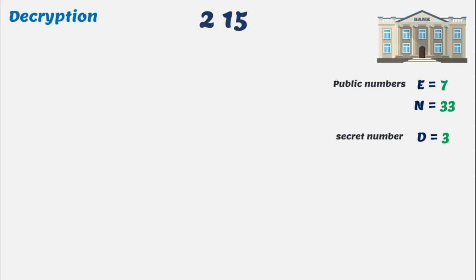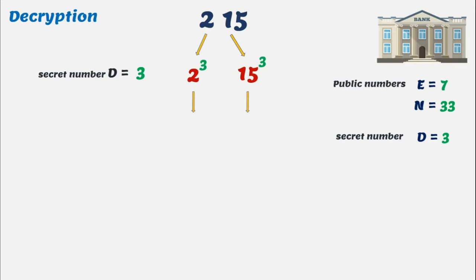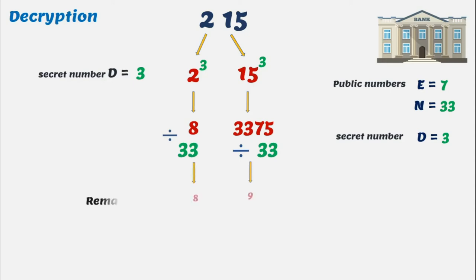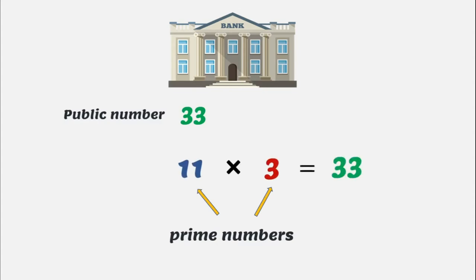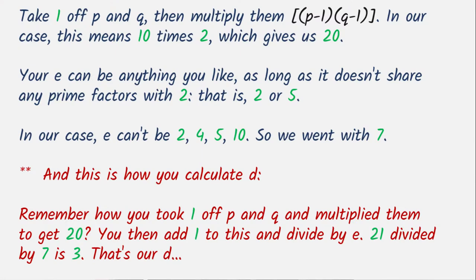Now for decrypting this message, we start by using the secret number D — in this case it is 3. There is a formula to find out this secret number, but we will get to it later. For the first step of decryption, we raise our encrypted code to the number D, which is 3, and we get the resulting numbers. Further, we again divide by N, which is 33, and find the remainder. We get 8 and 9, and the decoder then turns this back into letters, which is 'Hi'. The crucial number in this process was 33, which was made by multiplying two prime numbers, 3 and 11. These prime numbers are important for calculating the secret number D — without these primes, you wouldn't be able to decrypt the message. For mathematically keen viewers, the rules for finding E and D are shown on screen — you can pause the video to go through them.